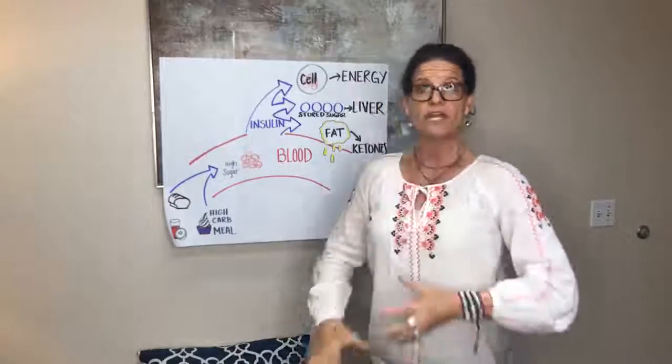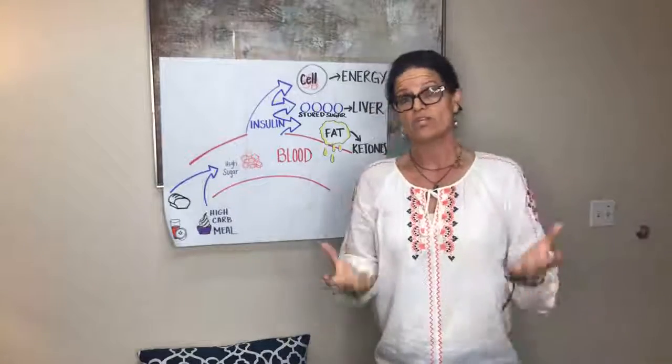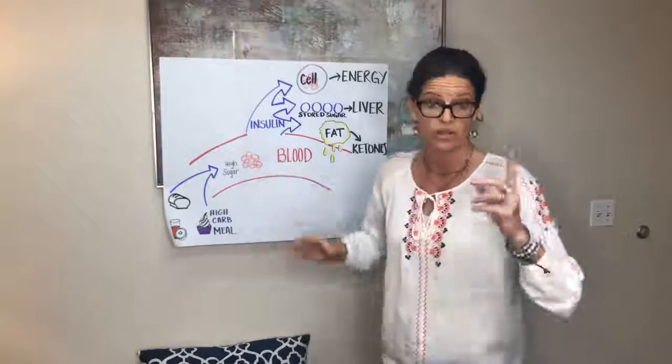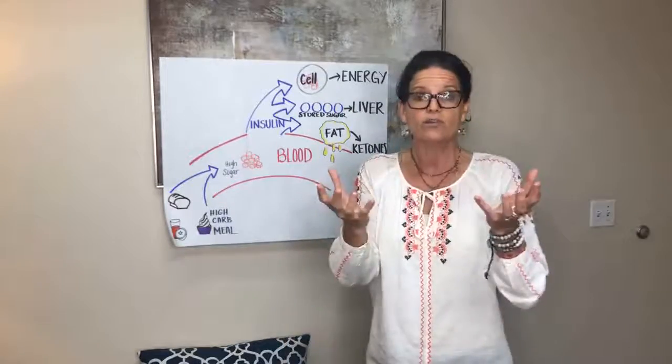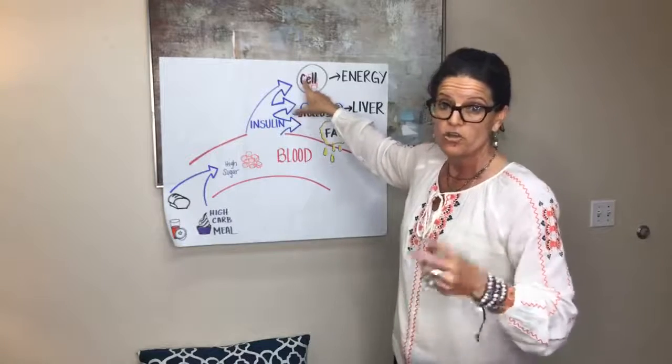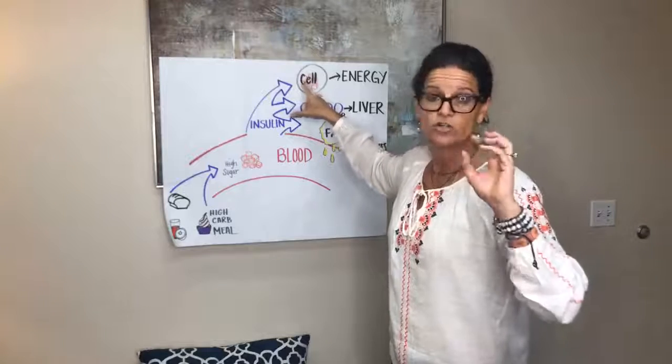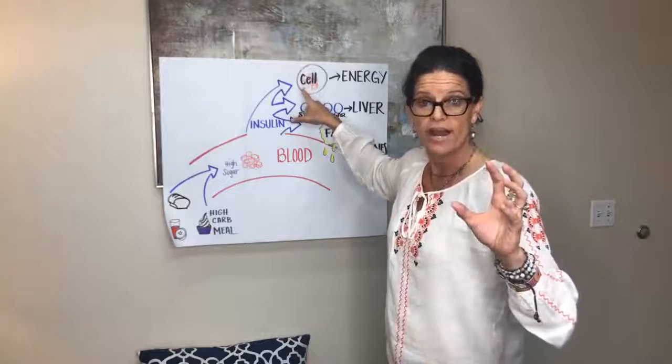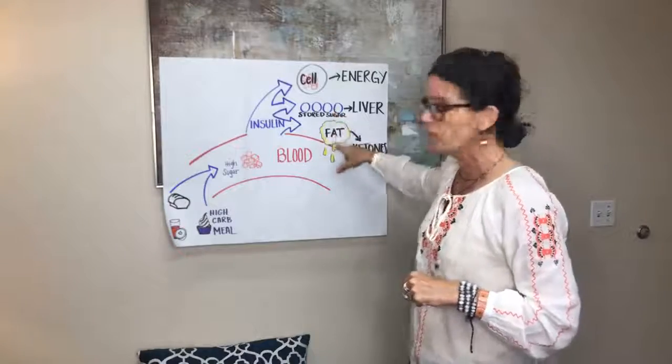This is why you could eat a high carb meal 10 or 20 years ago and actually have energy. Most of you probably now notice you don't have energy when you eat high carb. If you keep eating these high carb meals, you keep secreting insulin and the cells get overwhelmed. Your body says there's too much sugar and insulin coming, so it stores it in the liver and then in fat.